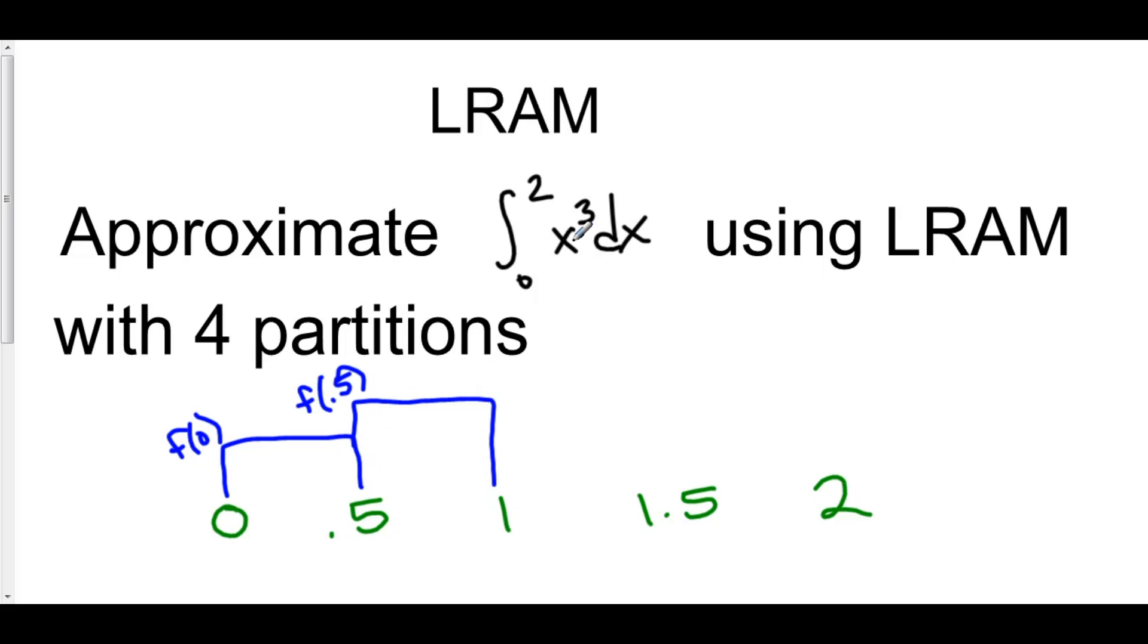Now my third rectangle, again, doesn't really matter where it is, what it looks like, just so I can know that it's a third separate rectangle. That one has a height at 1, so this is f of 1.